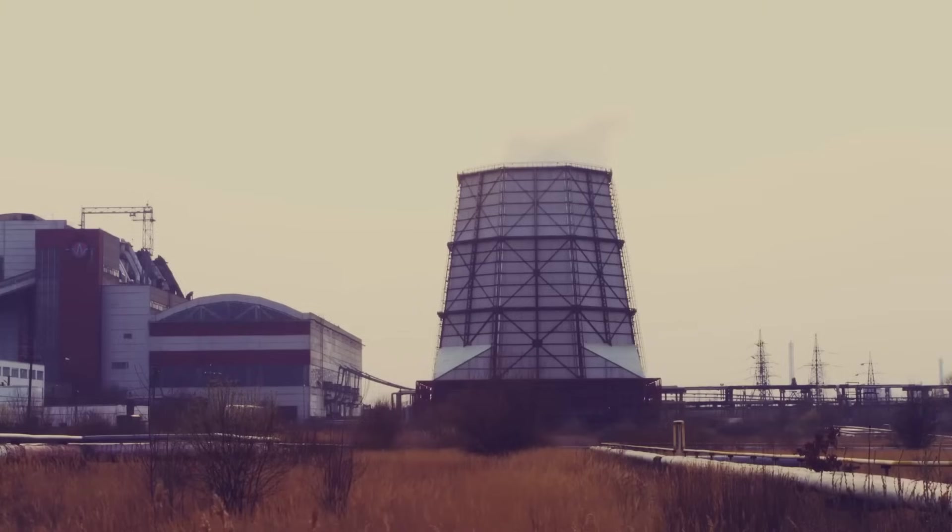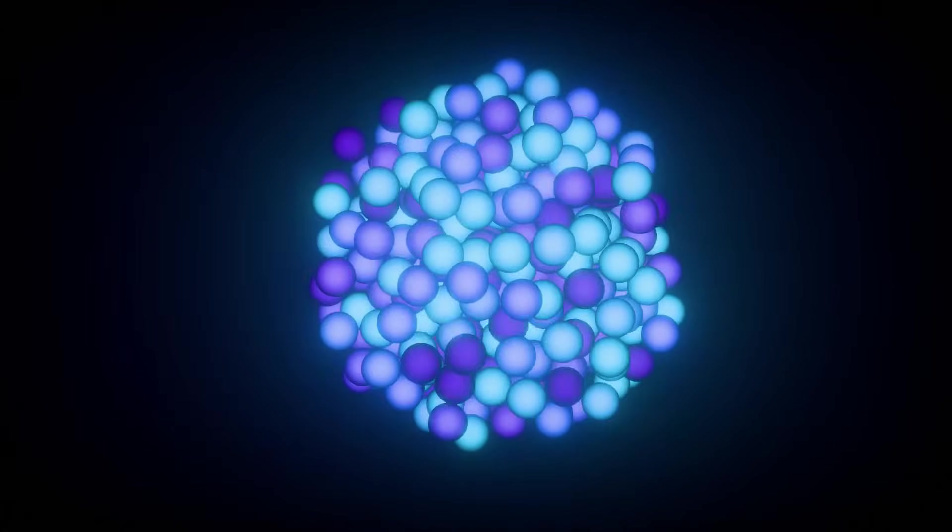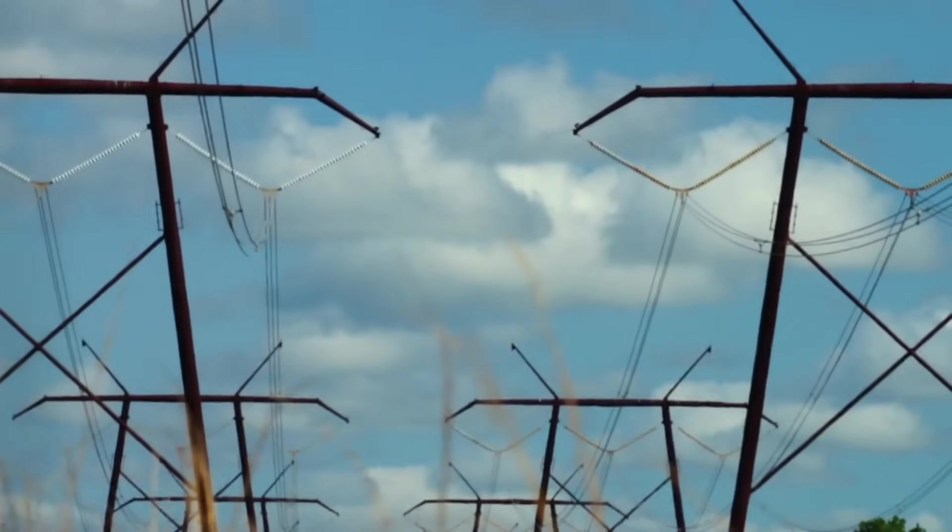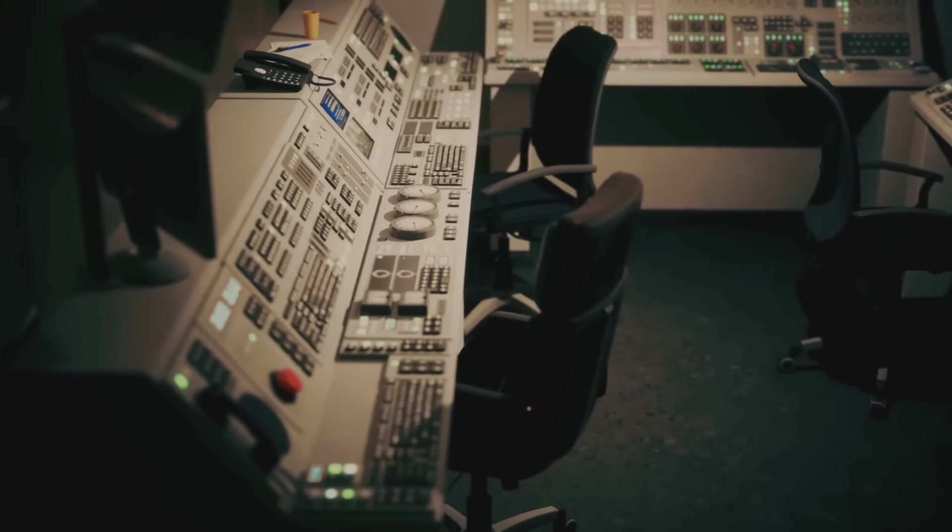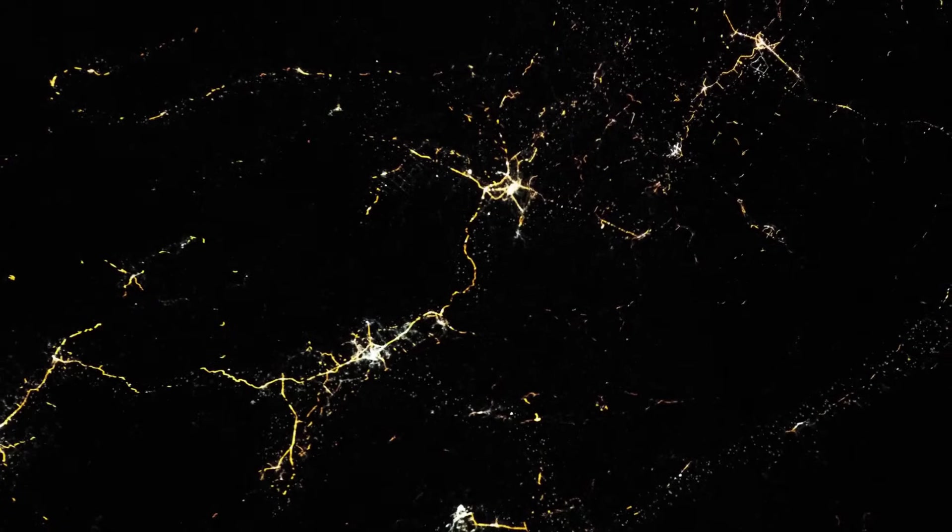The process is similar to coal plants, but the heat comes from splitting atoms, not burning fuel. The electricity travels through power lines to homes, schools, and businesses. Nuclear reactors are all about harnessing fission's heat, safely and efficiently. That's how splitting atoms lights up your world.